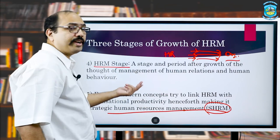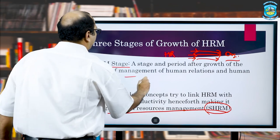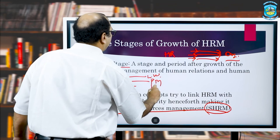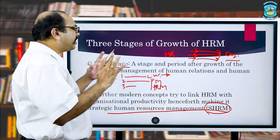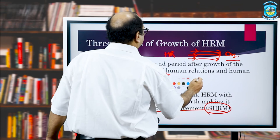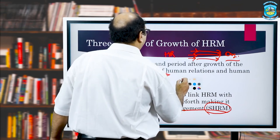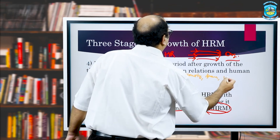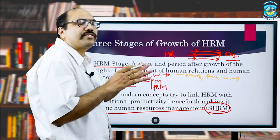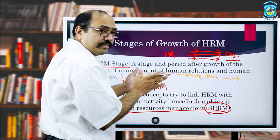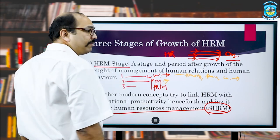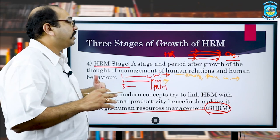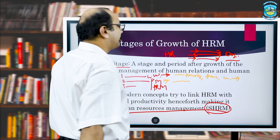So three stages are: labour welfare stage, personnel management stage, and HRM stage, with strategic HRM as a separate evolving discipline. In the labour welfare stage, everything pertained to only labour welfare — housing, finance, leaves, all only labour-related things — because at that point only industry labourers were the subject matter of concern. The second stage of personnel management started talking about employees, not just factory workers, but employees of different organizations working in different settings.